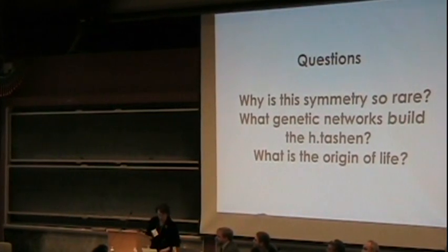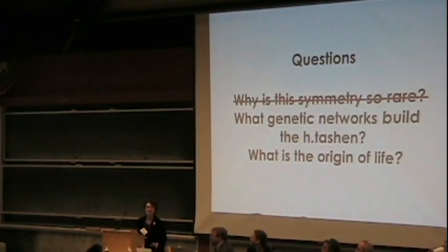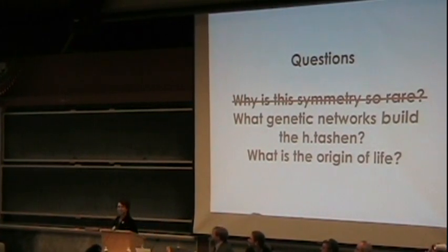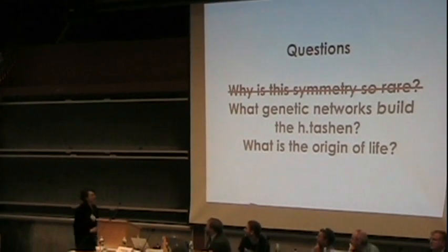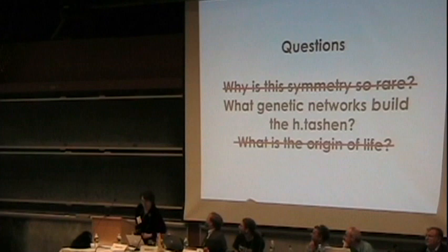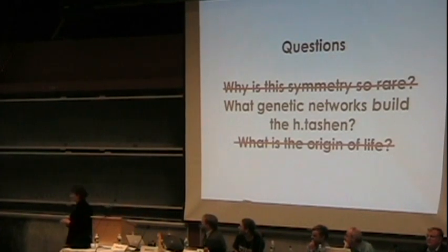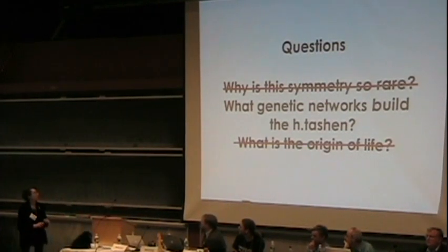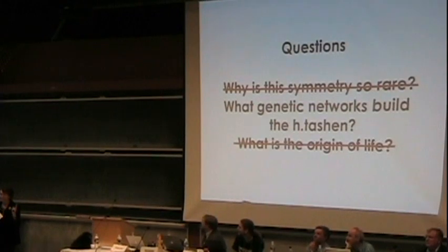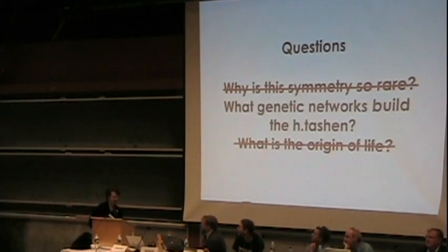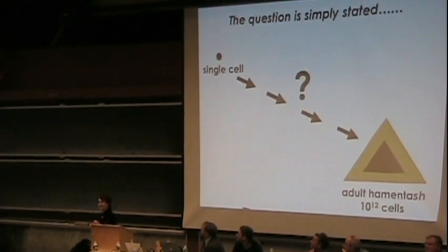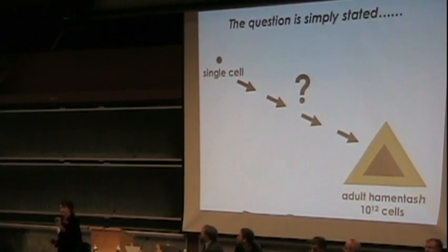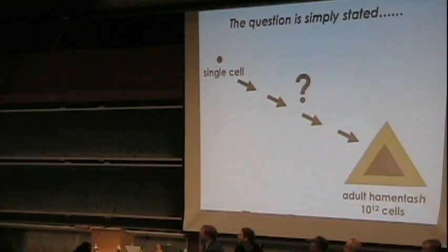And indeed, what is the origin of life? I have no idea about this, and in fact I never discuss the origin of life once the sun has gone down. So we'll focus instead on the question of genetic networks. The question really is very simple: how does a single cell, a fertilized something or other, become an adult Khamintoshan?